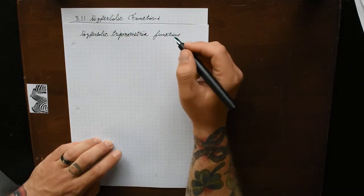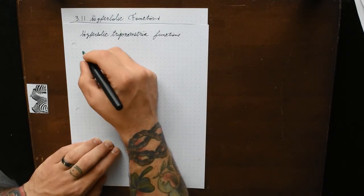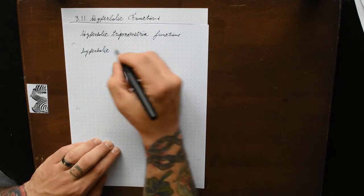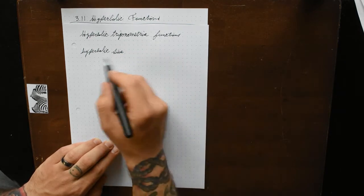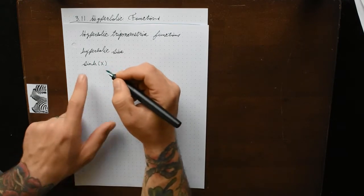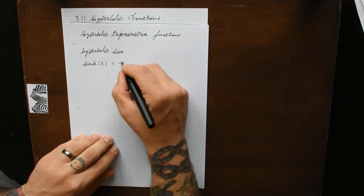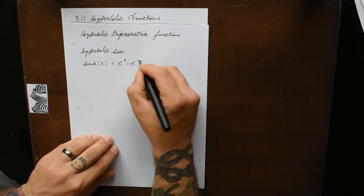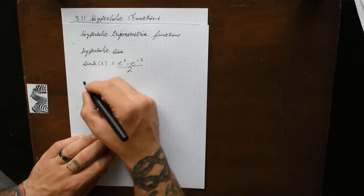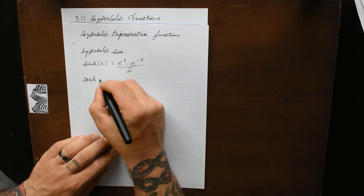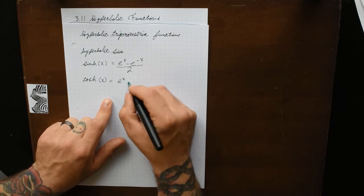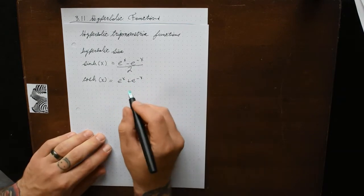We get a hyperbolic sine and cosine. Starting with hyperbolic sine: sinh(x) is equal to e to the x minus e to the negative x, all divided by 2. And cosh(x), the hyperbolic cosine, is equal to e to the x plus e to the negative x, all divided by 2.